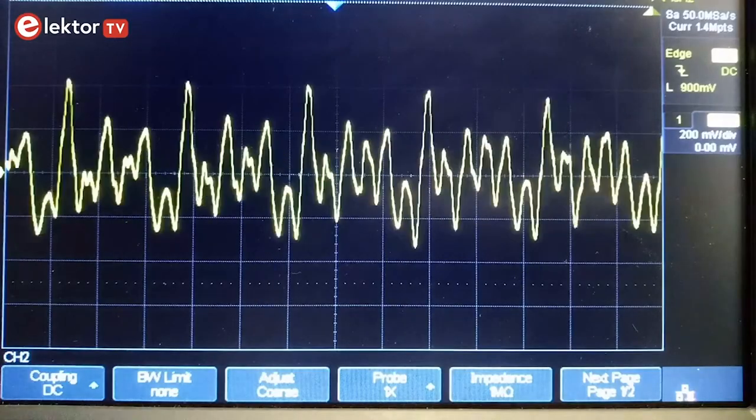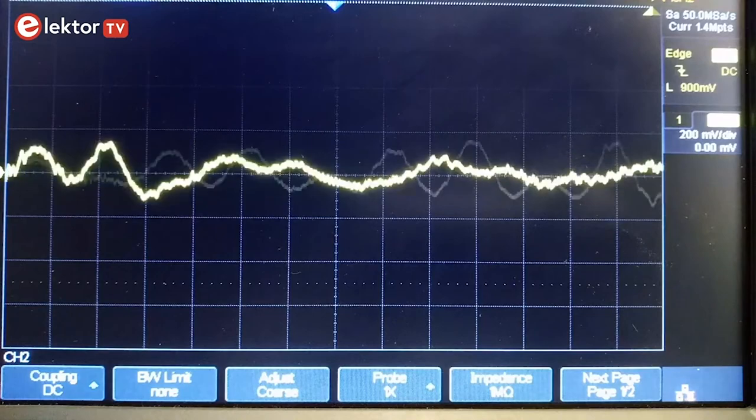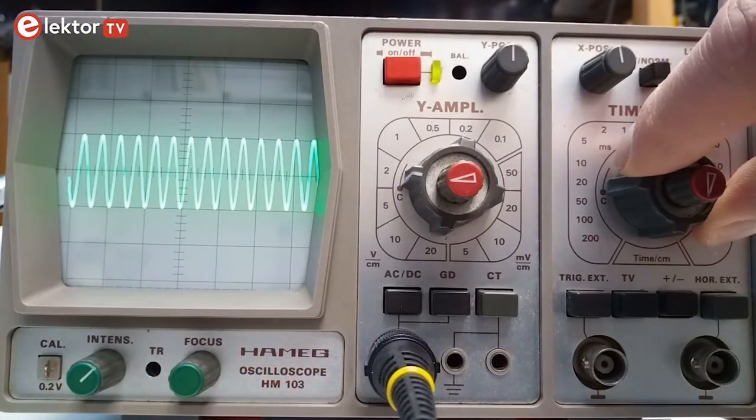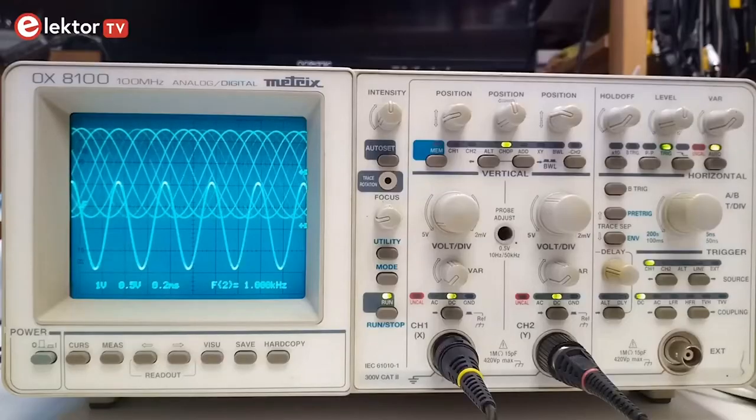By the way, in oscilloscope language a signal is also called trace. Single trace means one signal or channel, dual trace means two, etc.